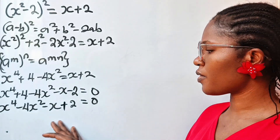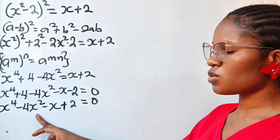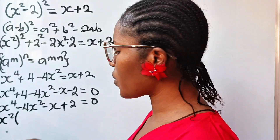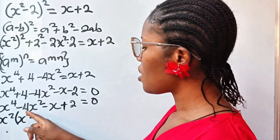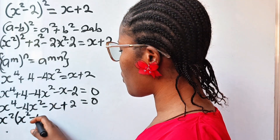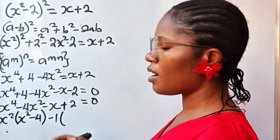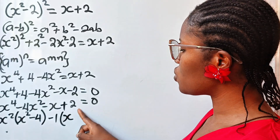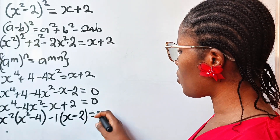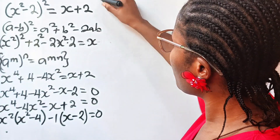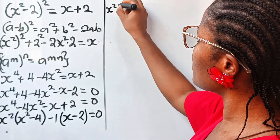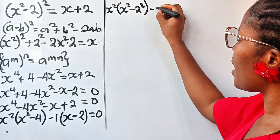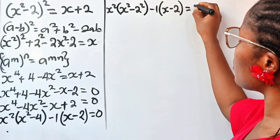Now let's factorize the first two and last two terms. The first two share x², so factoring: x²(x² - 4). Then the last two share -1: -1(x - 2). So we have x²(x² - 4) - 1(x - 2) = 0. Note that 4 is the same as 2².